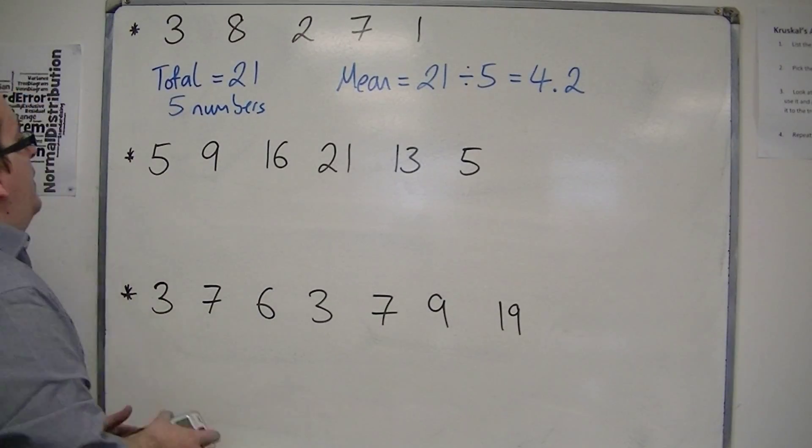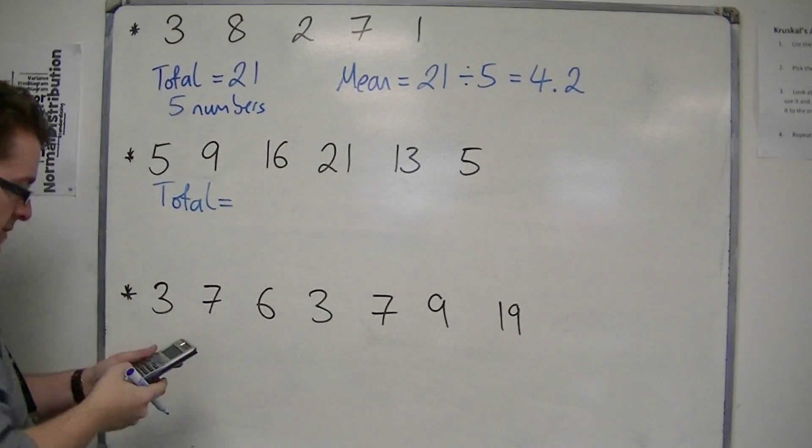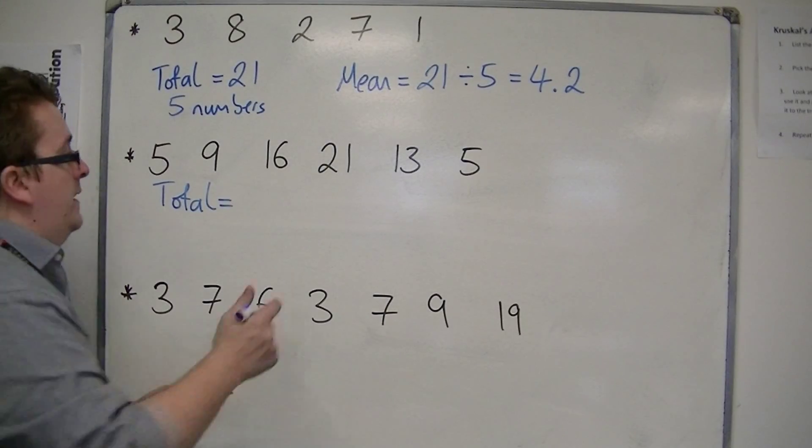Now, for this second set, add all the numbers together. So 5 plus 9 plus 9 plus 16 plus 21 plus 13 plus 5 is 69.